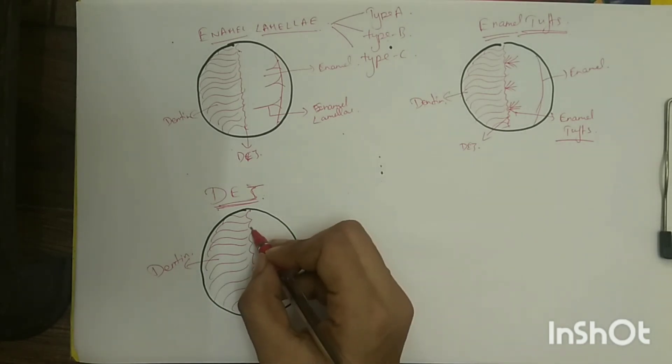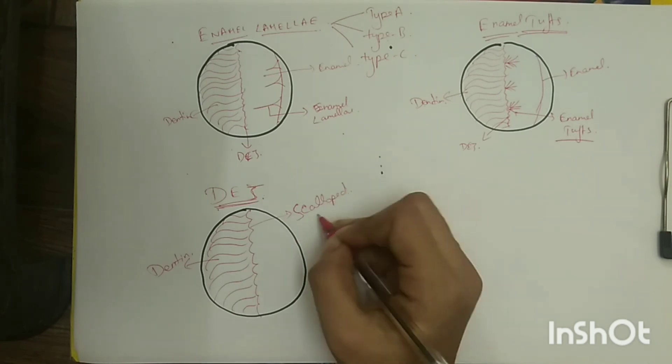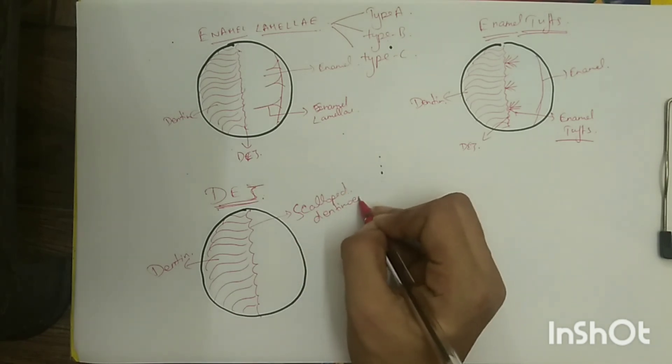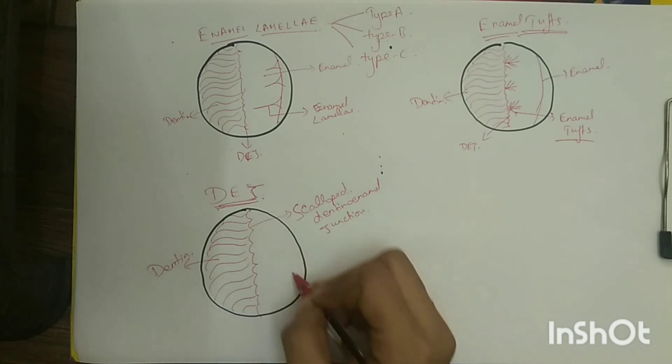In sections, the DEJ appears as a scalloped line and not a straight line. This irregular shape of the junction helps strengthen the union between the enamel and dentin and prevents shearing of the enamel during function.